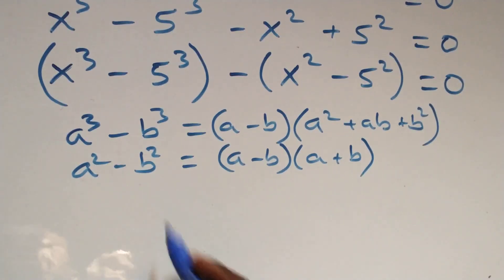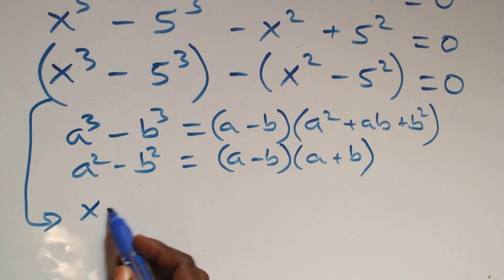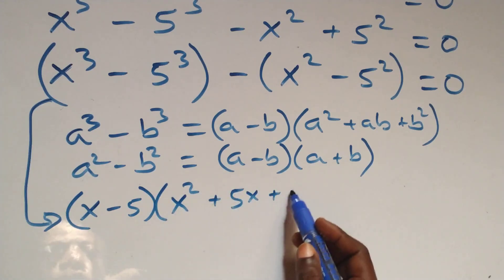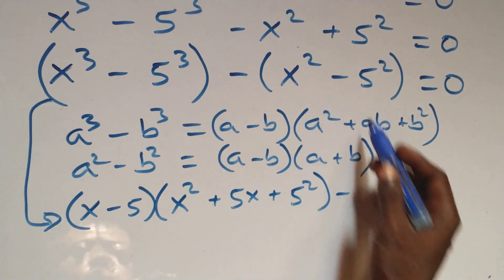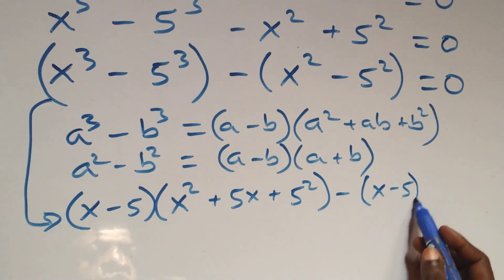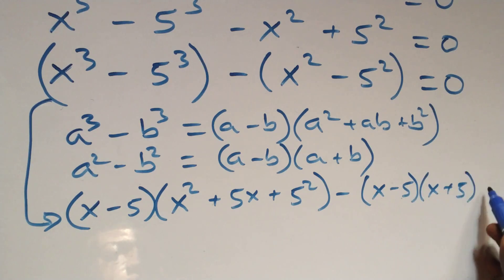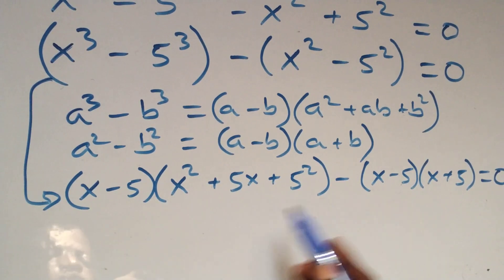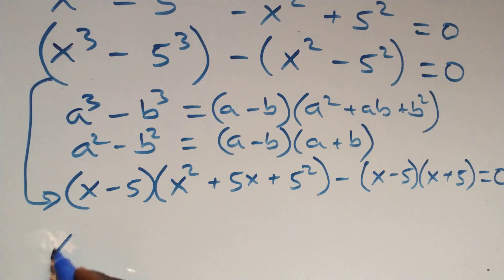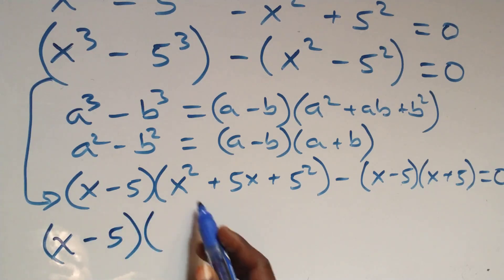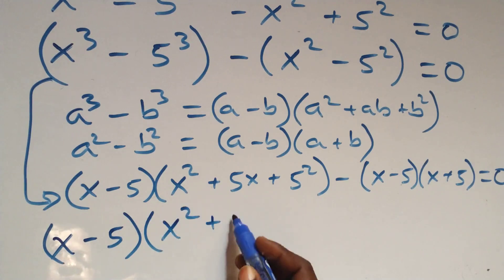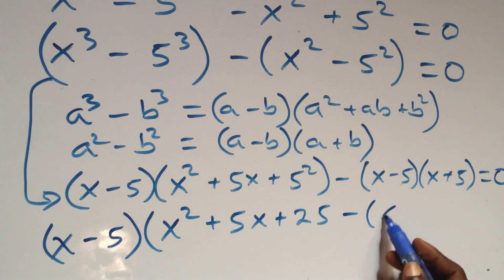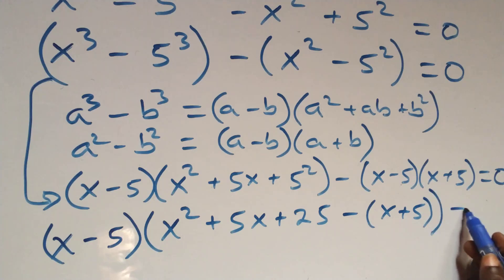Following these identities, this equation becomes: x minus 5 times bracket x squared plus 5x plus 5 squared, minus bracket x minus 5 times bracket x plus 5, equals 0. That is, we have x minus 5 as a common factor and we factor it out. What we have becomes x minus 5 times bracket, where we are left with x squared plus 5x plus 25, then minus bracket x plus 5, equals 0.